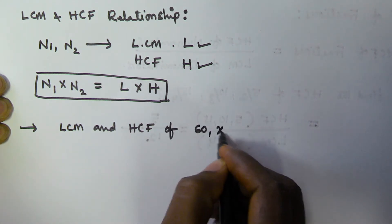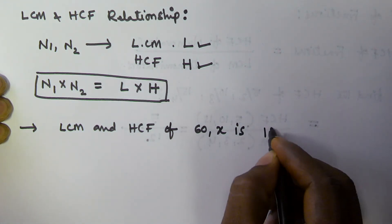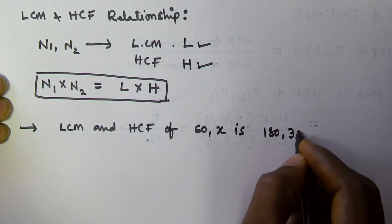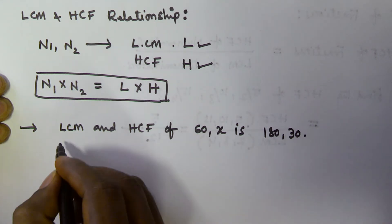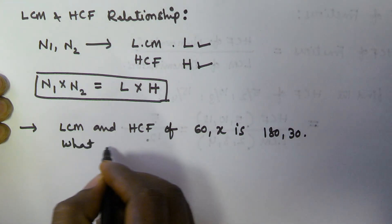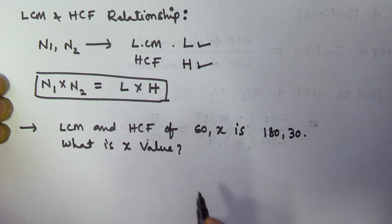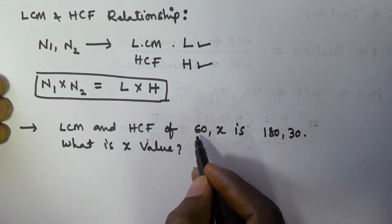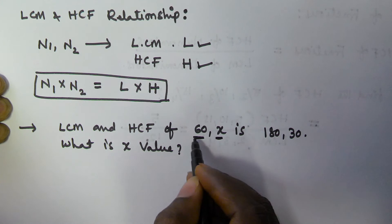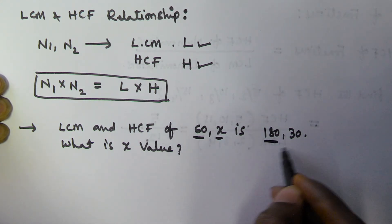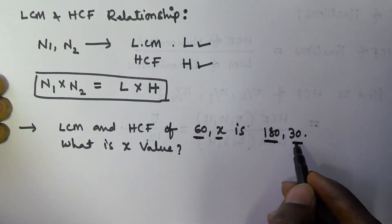Then what is x value? So here two values are given, 60 and x, and their LCM is 180 and HCF is 30, and we have to find the value of x.